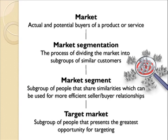If we take the automotive industry as an example, a market would be all people looking to buy a vehicle. Following a market segmentation process, a few distinct market segments can be identified. In this case, we might identify segments like families and singles.